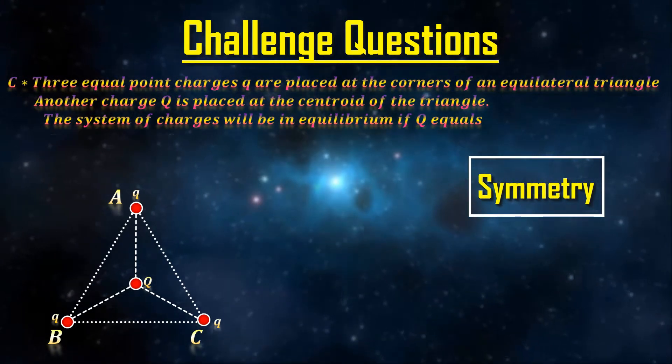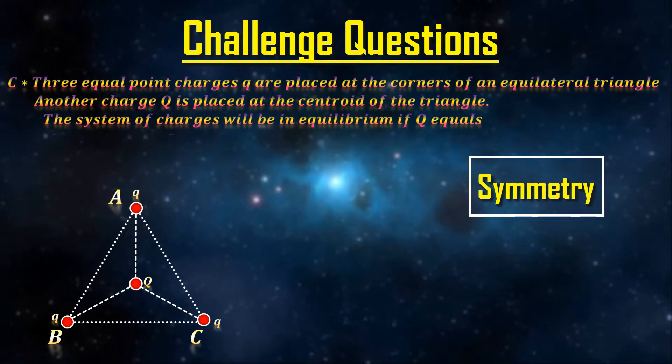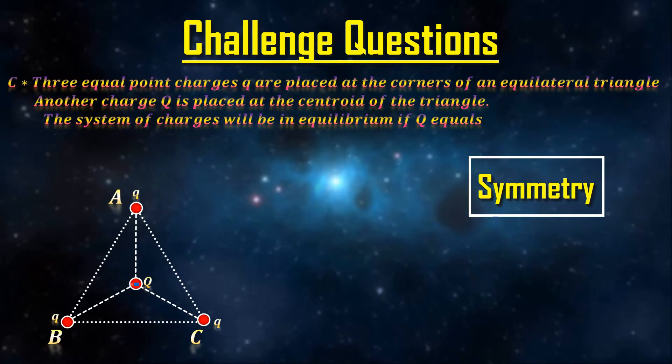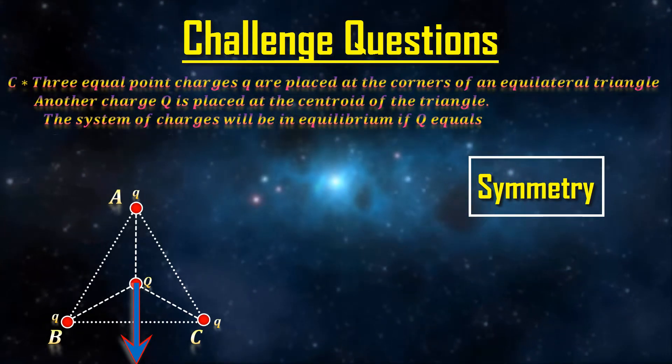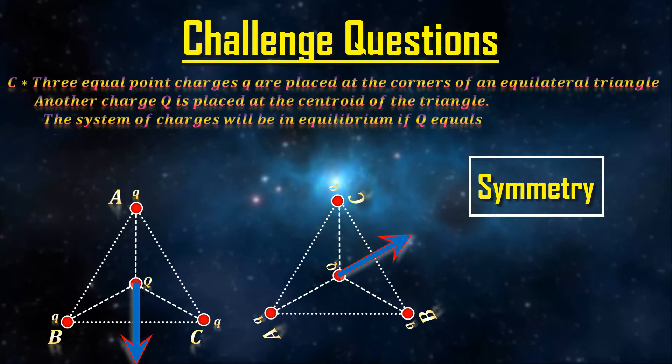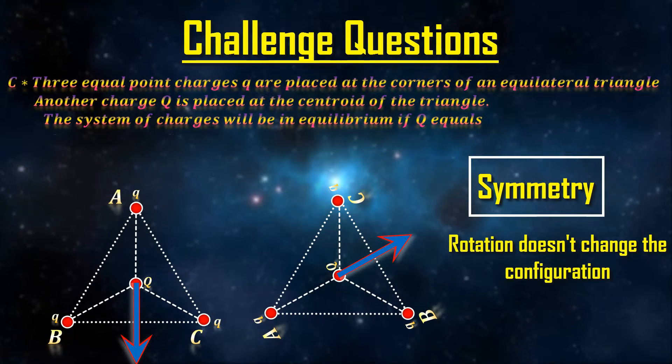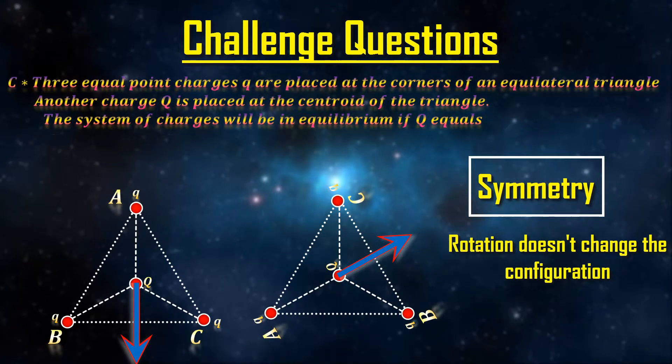Let's begin by assuming that the big Q is not in equilibrium, and that it experiences a net force, say downwards. Now, all I will do is rotate this. And I will argue that rotating the picture doesn't change the configuration one bit. It looks exactly the same.